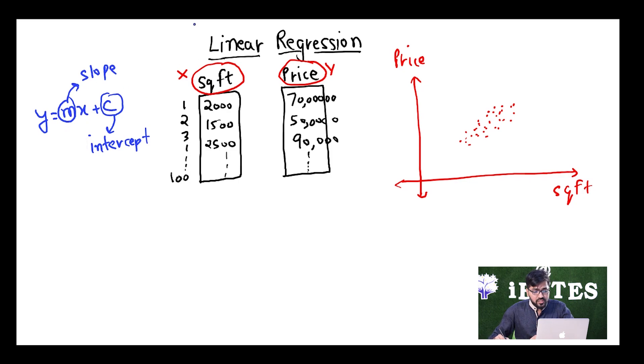What linear regression will try and do is it is going to try to build a line out of these data points, a line which is able to explain my training data, these 100 points, very well. Obviously, a line such as this makes not much sense. The line would look something similar to this.